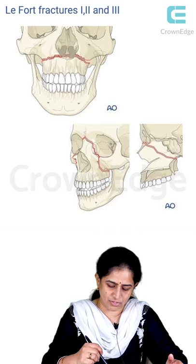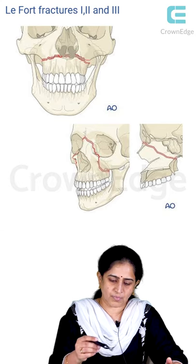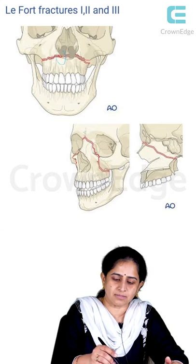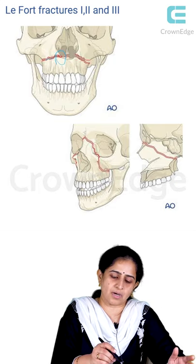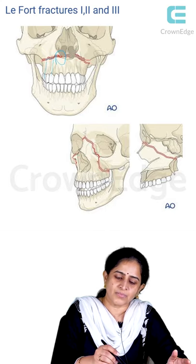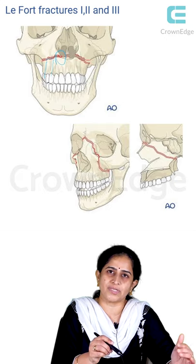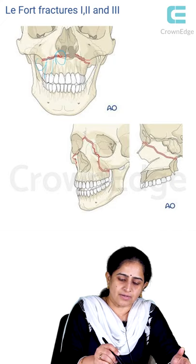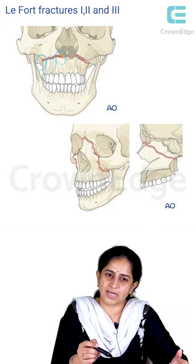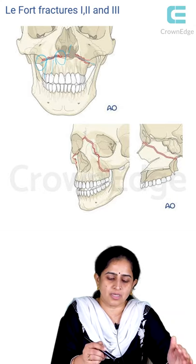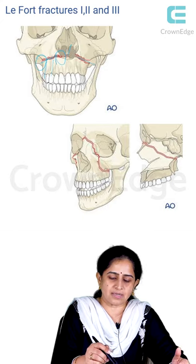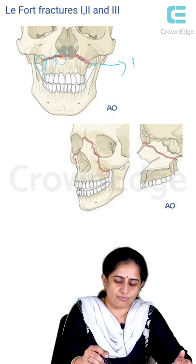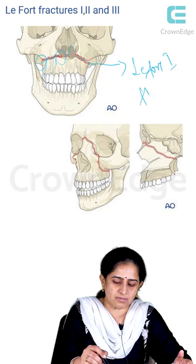When we talk about a Le Fort 1 type of fracture, it starts at the lateral pyriform aperture, goes laterally down along the anterior wall of the antrum, above the canine fossa, above the roots of the maxillary canine and first molar, and goes along the posterior surface of the maxilla until it reaches the pterygoid plates, fracturing them at the junction of the superior one-third and the inferior one-third. This fracture can run either bilaterally or unilaterally. There is also a central portion running through the nasal cavity along the lateral wall of the nose, and these two fractures meet posteriorly to divide the entire maxilla away from the cranial base. This type of fracture is called a Le Fort 1, also known as a floating maxilla.